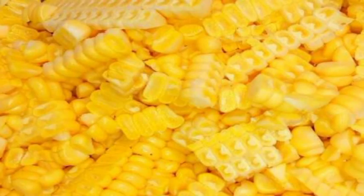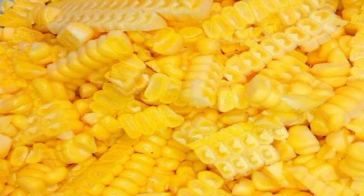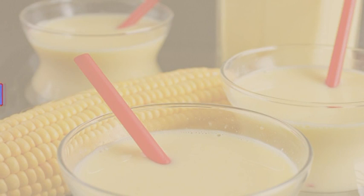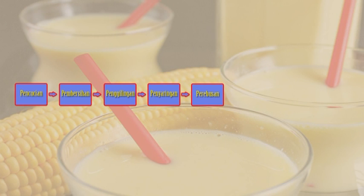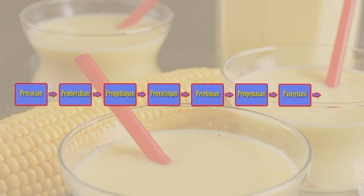Dalam proses pengolahan susu jagung, siapkan jagung pipilan segar. Langkah pertama adalah pencucian dan pembersihan menggunakan baskom plastik. Kemudian setelah bersih, masukkan ke dalam blender untuk penggilingan atau penghancuran. Hasil blenderan kemudian disaring menggunakan saringan, lalu air perasan jagung direbus dengan alat perebus. Hasil rebusan dimasukkan ke dalam botol kemasan, kemudian dilakukan pasteurisasi dan terakhir pelabelan.